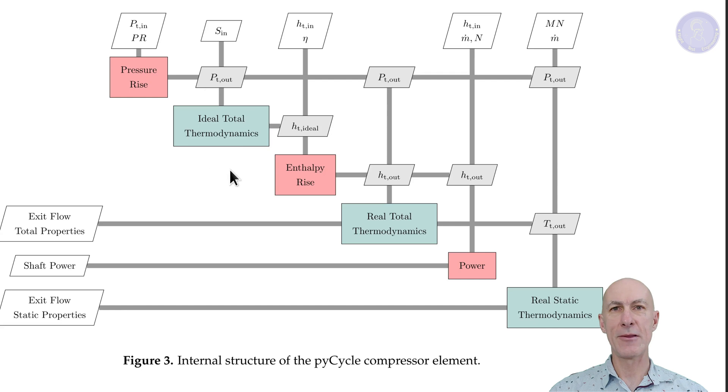We can see in the figure that inside the compressor element, there are smaller computation sub-blocks that are interconnected with each other. In this case, we have 6 sub-blocks. The pressure rise, this figures out how much the pressure increases as the gas goes through the compressor, based on the compressor's pressure ratio, which is a design choice, and the starting pressure.